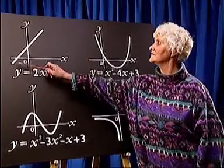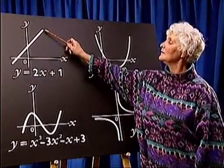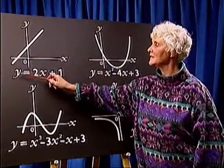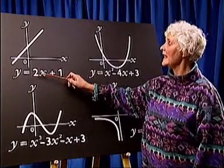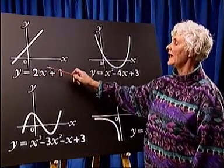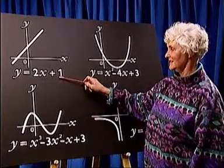Now, the easiest type of graph to recognise is the straight line, because the equation will always be of the form y equals mx plus c, where m is the gradient and c is the intercept.